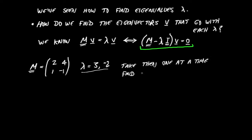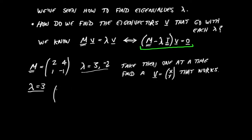We write our vector to find as just x and y. Looking at the green equation, the matrix is a difference of M and lambda times the identity. With our lambda value of 3, we write out that difference matrix: it's going to be 2 minus 3, then 4, then 1, and minus 1 minus 3.